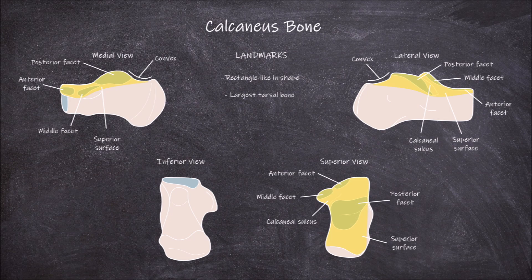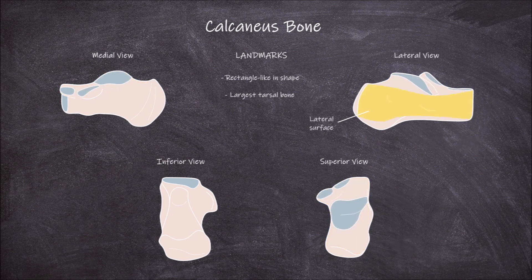The fifth surface is the lateral surface. This surface is largely flat except for two structures. The distal structure on this surface is the fibula trochlea. Proximally is an elevation in the bone, which is where the calcaneofibular ligament attaches.